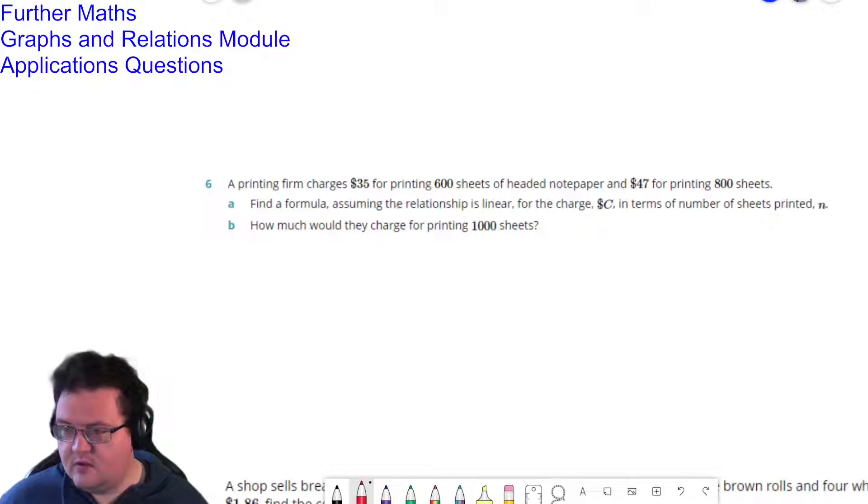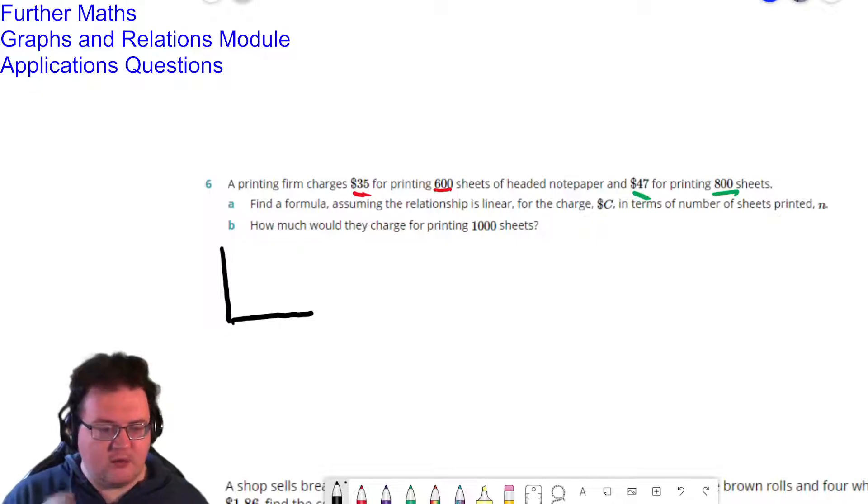I have the 35,600 and then I have the 47 and 800. So what I'm going to do is I'm going to use these as my data points. So if I was to plot very quickly, I would have the number of sheets along the bottom. And then I would have the cost. Now, the reason why I'm doing it in that order, even though these are listed in cost for the sheets, is that the question wants formula for the charge, the total charge for the n number of sheets printed.